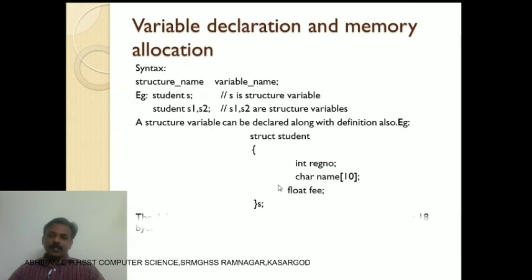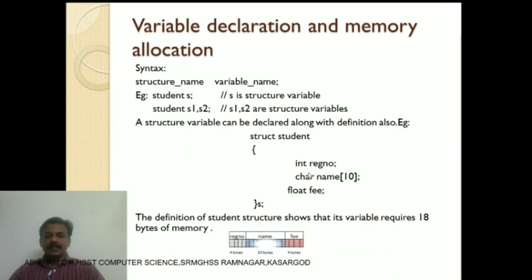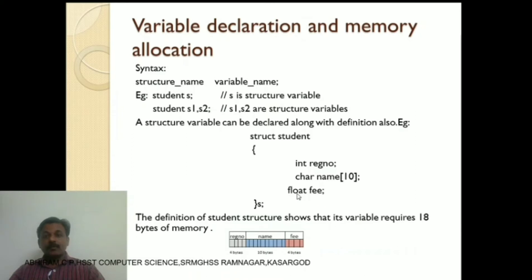Now we will discuss memory allocation. The student structure variable requires 18 bytes of memory. Register number is represented using int, which requires 4 bytes in GCC. Name is a character array of size 10, so 10 × 1 = 10 bytes. Float fee requires 4 bytes. So 4 + 10 + 4 = 18 bytes total. This is the memory representation of the student structure.